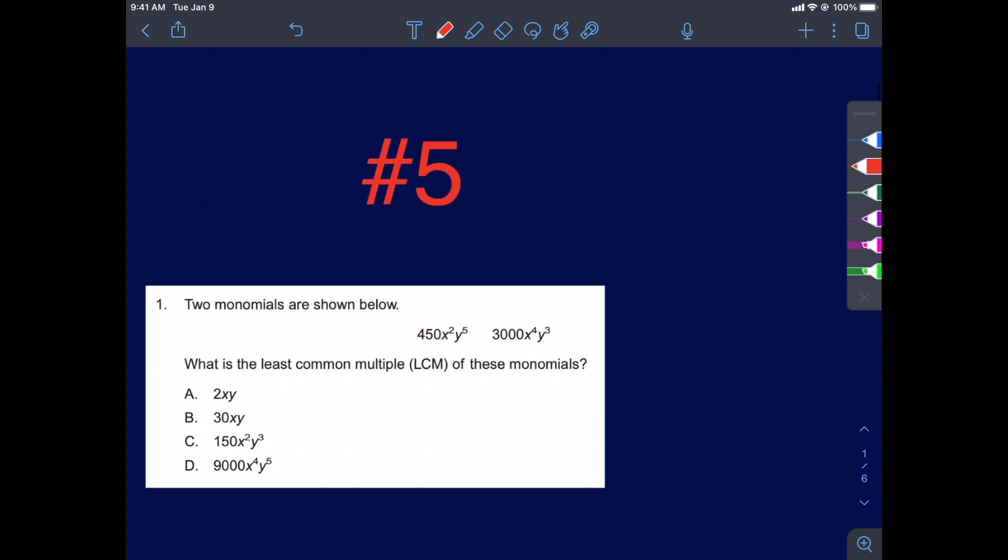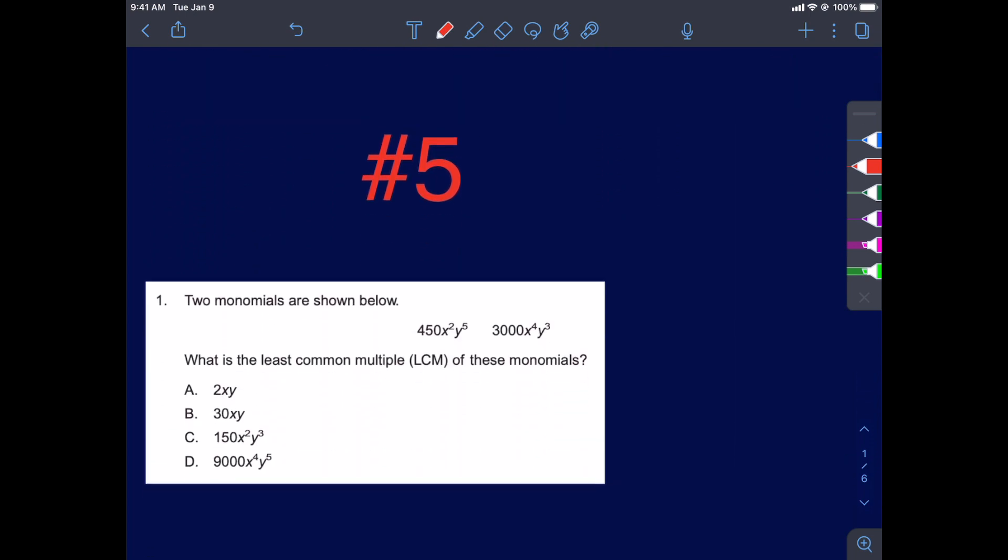At number 5, two monomials are shown below. What is the least common multiple of these monomials? Okay, we need to know what least common multiple means. It means a number that they would both be factors of. They would both go into evenly.